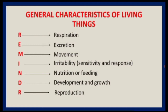If these metabolic waste substances are not removed, the cells will be poisoned, reactions will slow down, and death may occur. Plants have no special excretory organs to remove metabolic waste products, but animals have special excretory organs to remove metabolic waste materials.